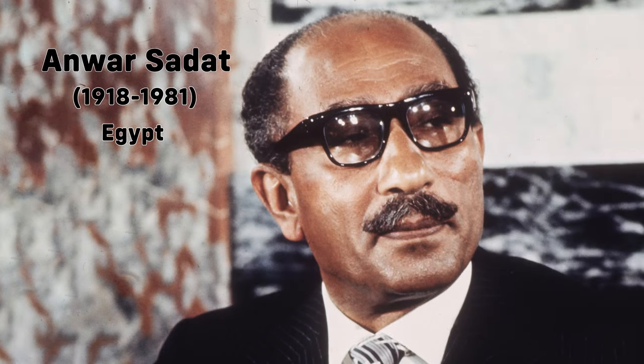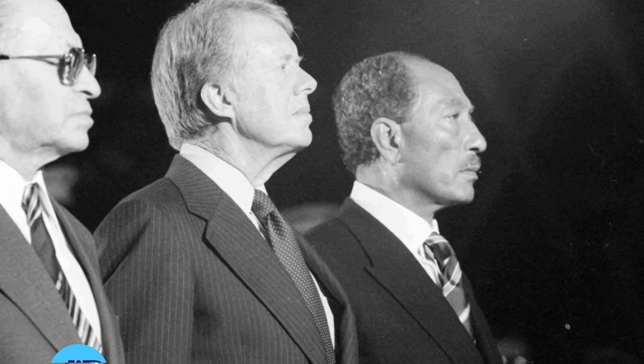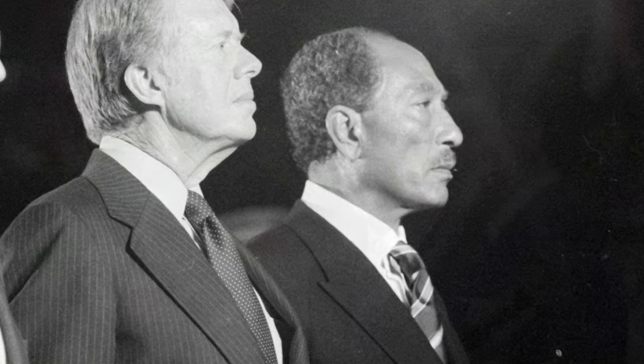Anwar Sadat was the President of Egypt and a key figure in the Arab-Israeli peace process, notably signing the Camp David Accords with Israel in 1978. Sadat was assassinated on October 6, 1981 during a military parade in Cairo by Khaled al-Islamboli, an extremist belonging to the Egyptian Islamic Jihad. The assailant opposed Sadat's peace efforts with Israel and his moderate policies, viewing them as a betrayal of the Arab cause. Sadat's assassination led to an increased crackdown on Islamic groups in Egypt and had implications for the region's politics, including the continuity of peace talks with Israel.